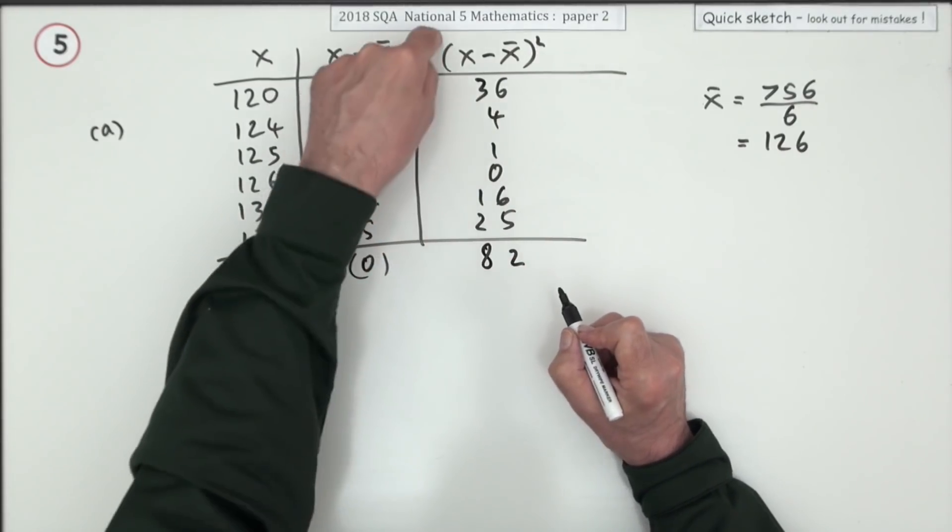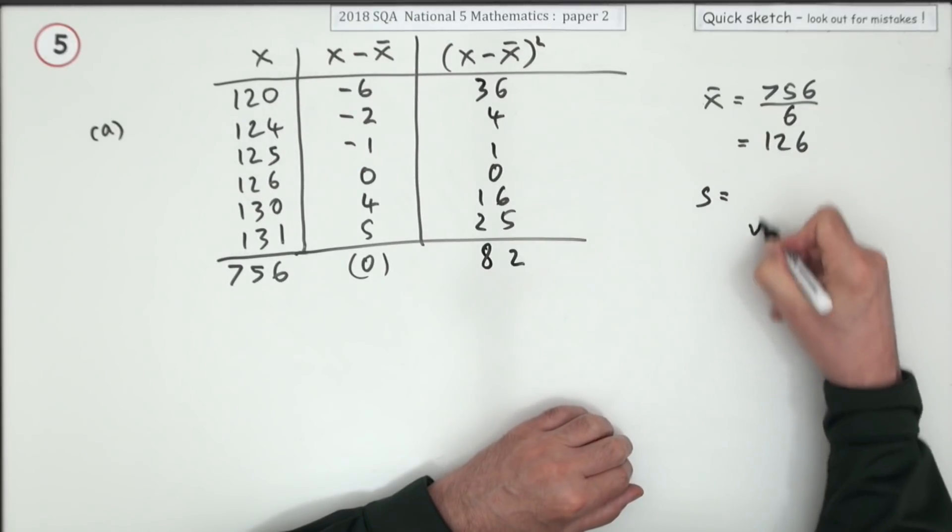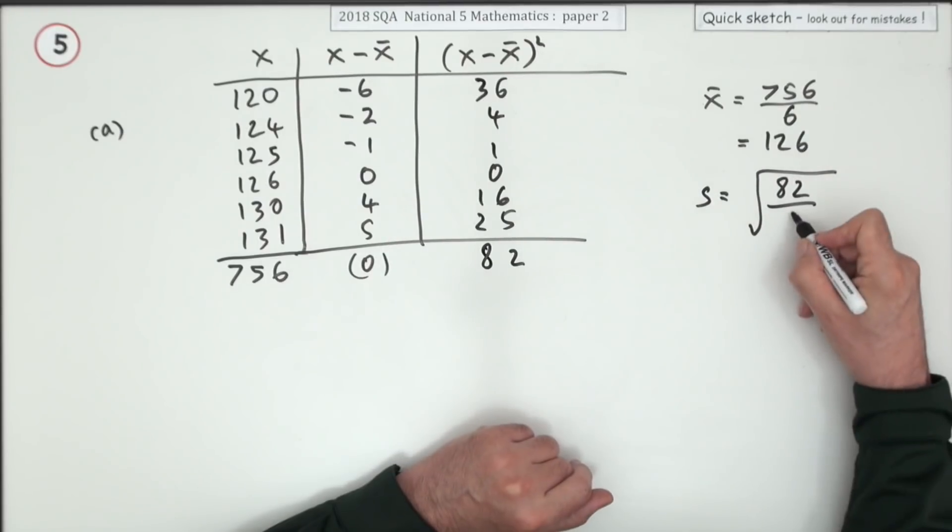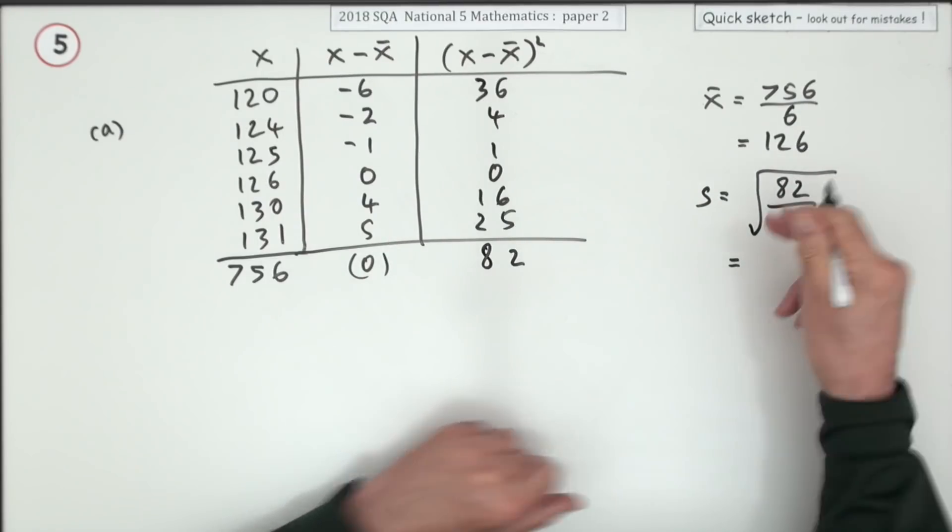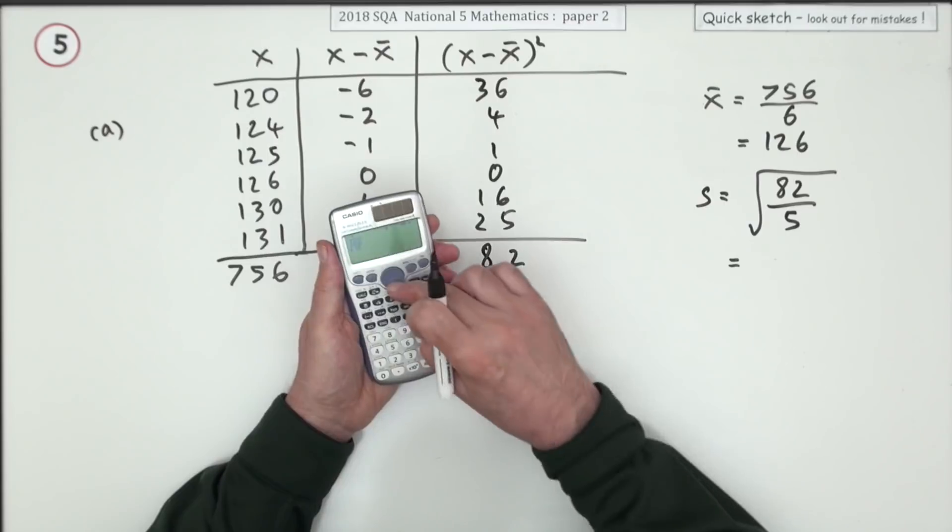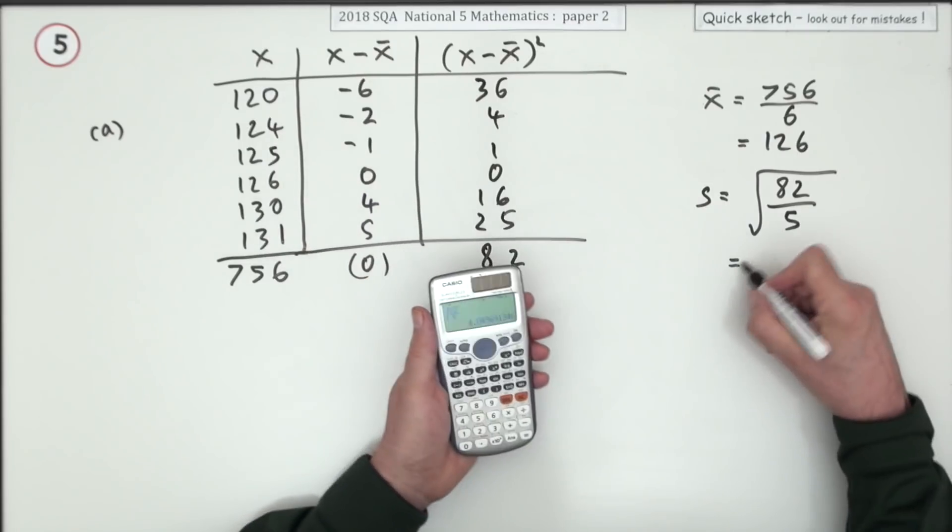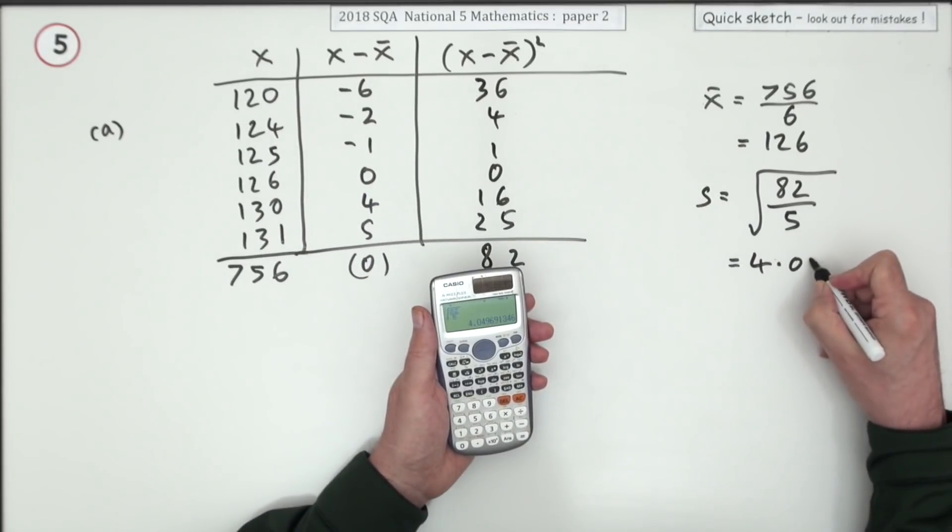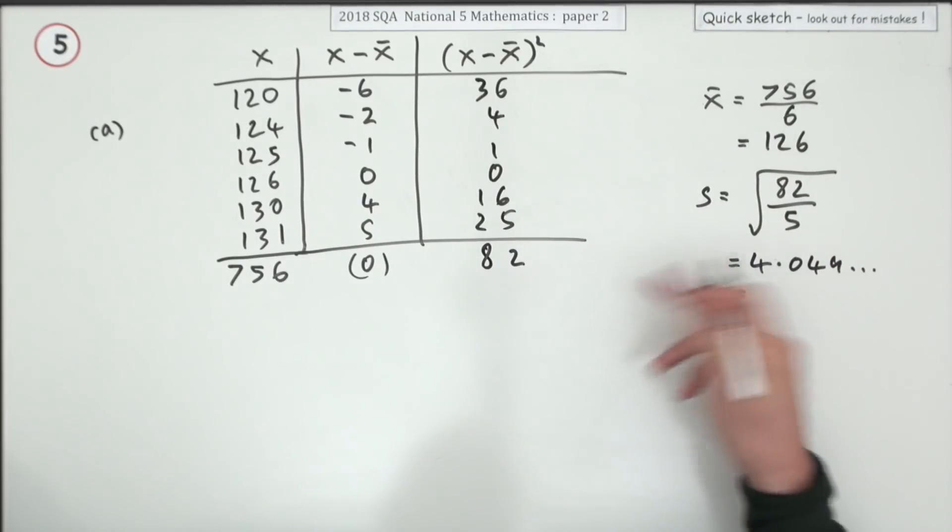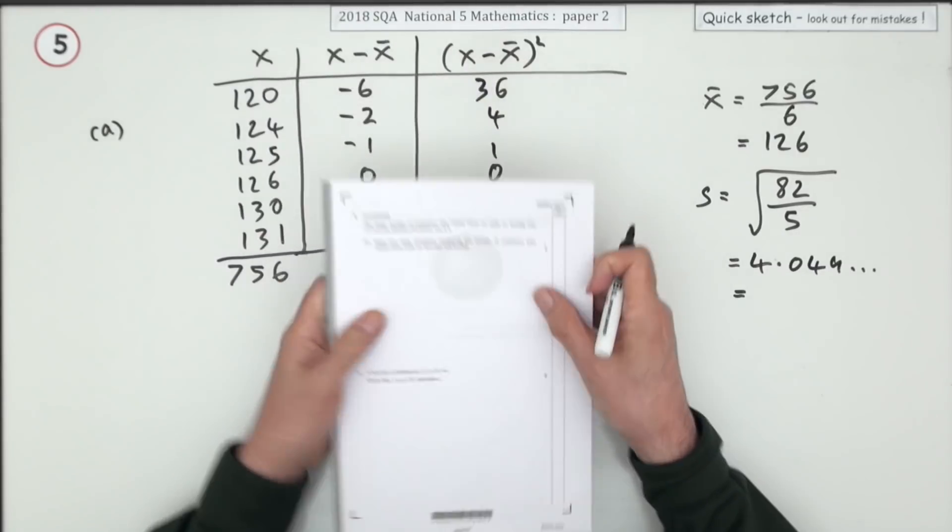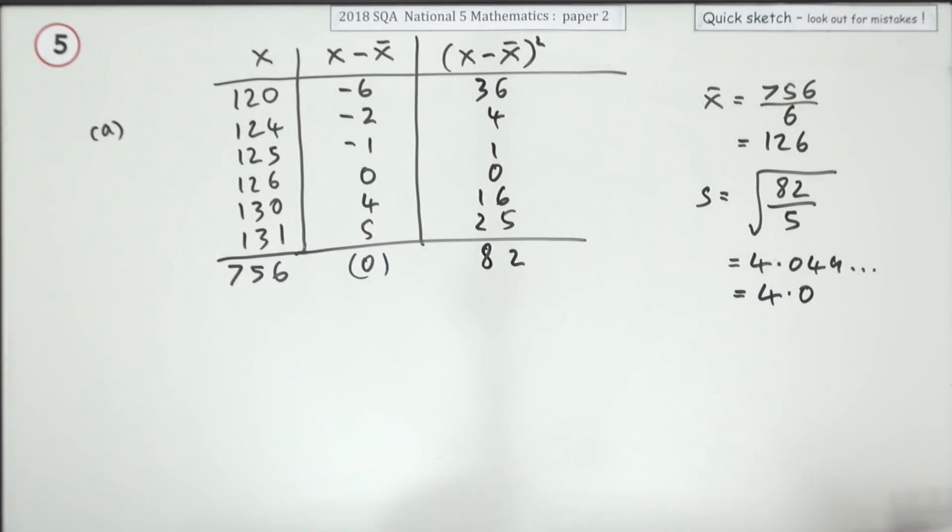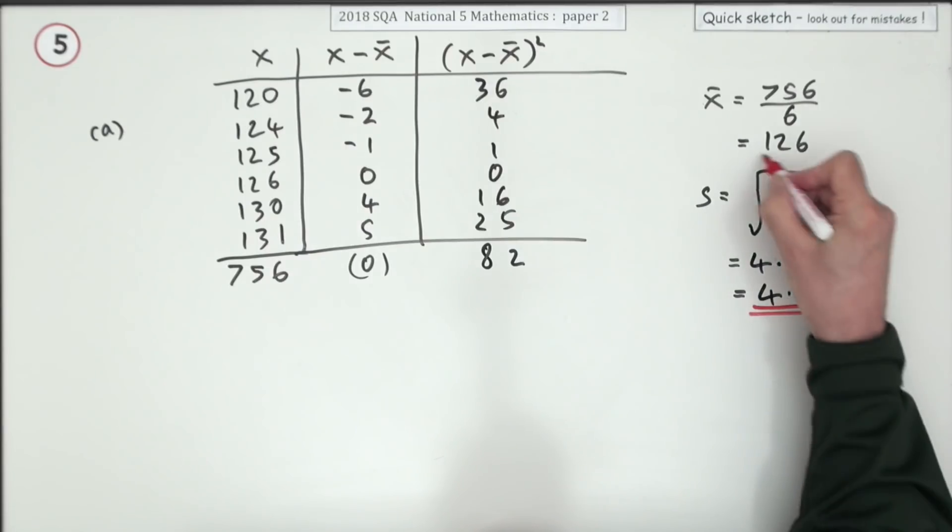Now that's sigma in the formula, so I can just put those numbers straight into the square root. It's 82, and it says over n minus 1, so that means over 5. Now I'll need to use a calculator. And that comes to 4.049 and so on. And then checking with a comparison what its standard deviation looks like, it's got one decimal place, so I'll give this one one decimal place. Right, that's part A.